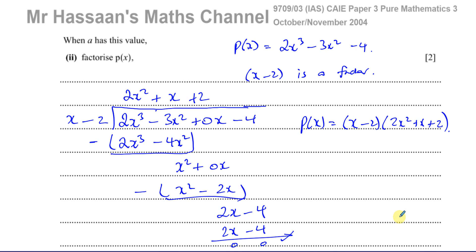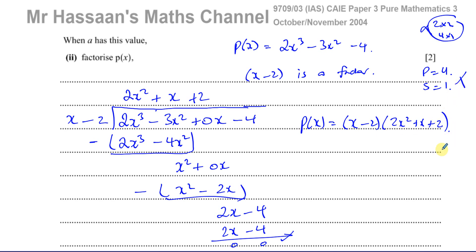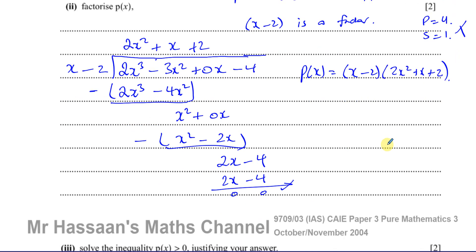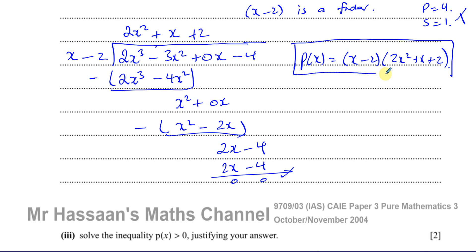Now, can we factorize 2x² + x + 2 further? We need two numbers that multiply to give 4 (the product of 2 and 2) and add to give 1. The possibilities are 2×2 or 4×1, but neither gives a sum of 1. So let's check the discriminant: B² − 4AC = 1² − 4(2)(2) = 1 − 16 = −15. Since the discriminant is less than 0, there are no real solutions, so this does not factorize further. P(x) = (x − 2)(2x² + x + 2) is fully factorized.